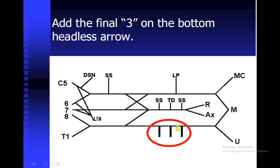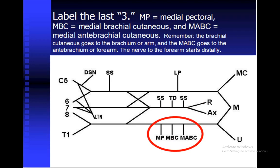The final three go at the bottom. Label them as MP for medial pectoral nerve; above we have lateral pectoral and medial pectoral. Then these two are the cutaneous nerves: medial brachial cutaneous and medial antebrachial cutaneous nerve. Remember that brachial goes to the arm and antebrachial goes to the forearm — and the forearm is surely more distal.